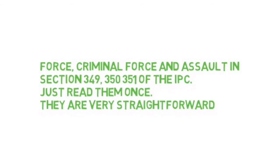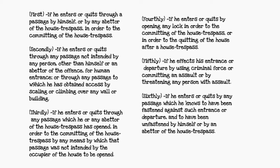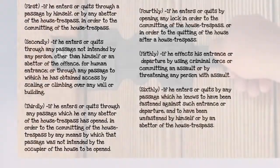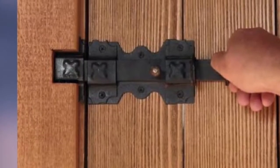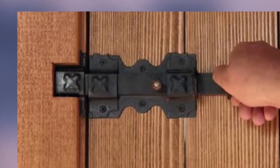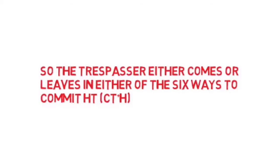Those sections are very straightforward and easy. If you have trouble understanding criminal force and assault, just leave a comment and we'll make a video on that. Sixth, if he enters or quits by any passage which he knows to have been fastened against such entrance or departure, and to have been unfastened by himself or the abettor — that's the sixth way of house breaking.